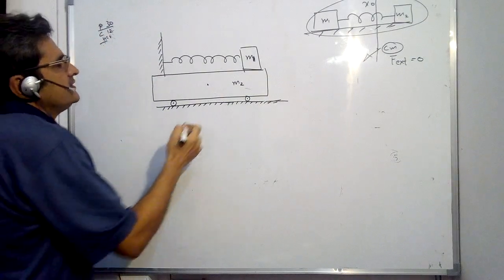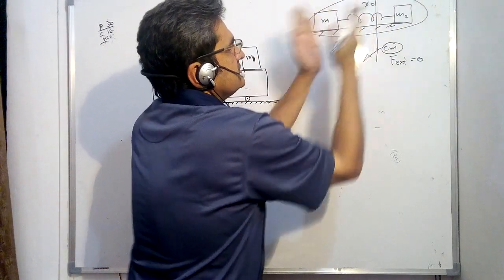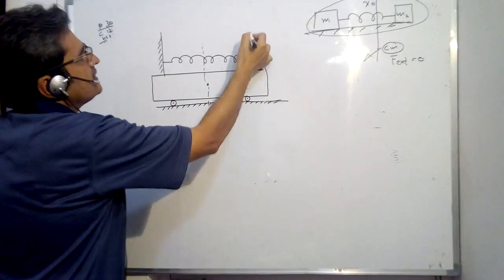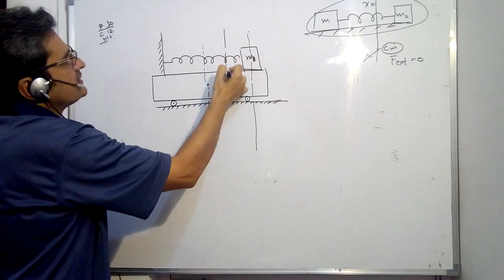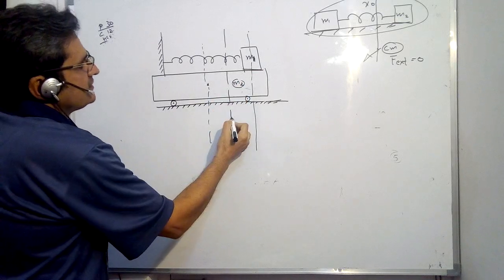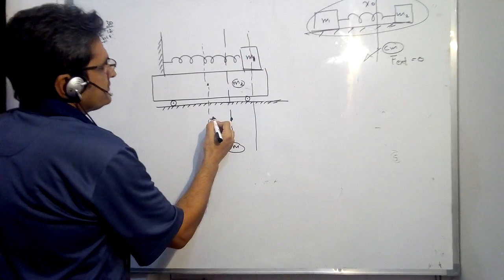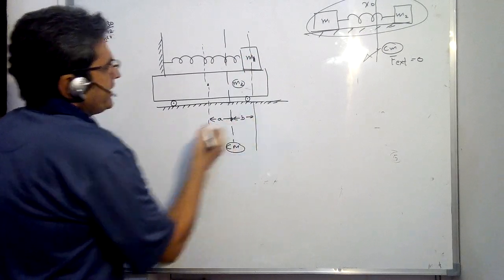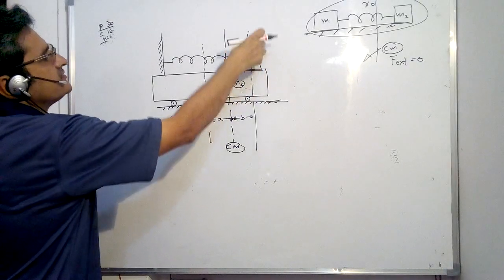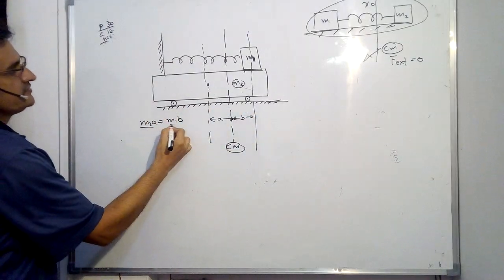The center of mass of the system — not of each individual mass — remains at the same place. For m2, let this be the center of mass location, and this was the location for m1, and let this be the combined center of mass. By the property of center of mass, m2 times a equals m1 times b, taking moment about the center of mass.